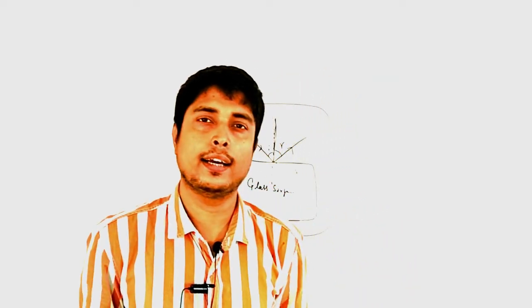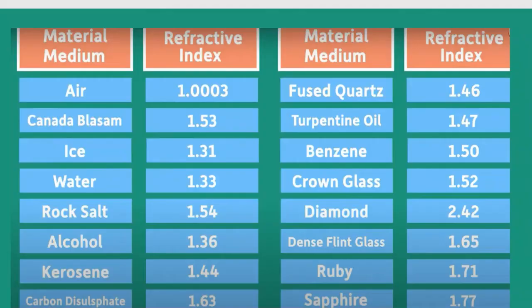What does it mean that the refractive index of water is 1.33? Can you tell me? If someone can tell me, please tell me in the comments — what is the meaning of this refractive index value?